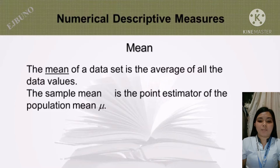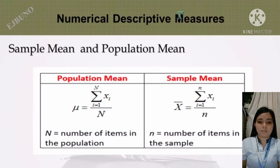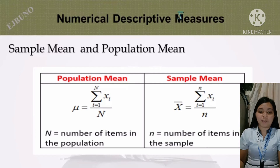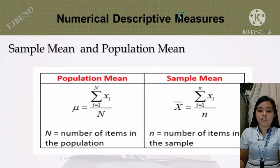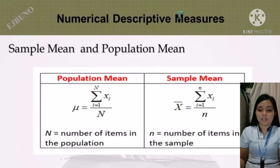Mean. The mean of a data set is the average of all the data values. The sample mean is the point estimator of the population mean. The population mean equals the summation of x from 1 to capital N, over capital N, where capital N is the number of items in the population. The sample mean equals the summation of xi from i equals 1 to n, where small n is the number of items in the sample.